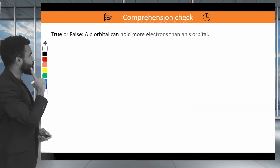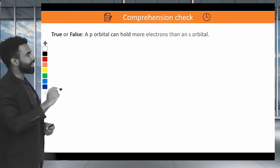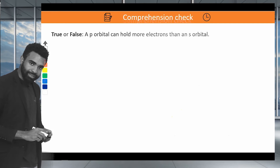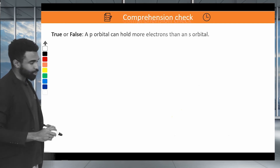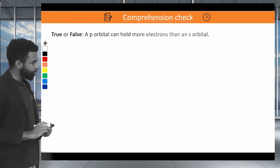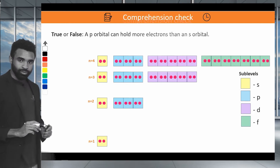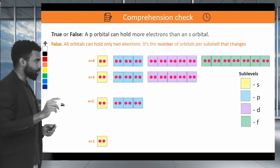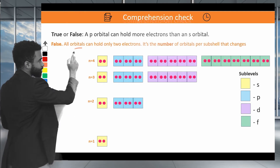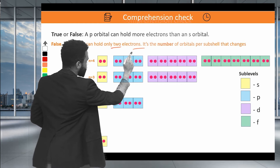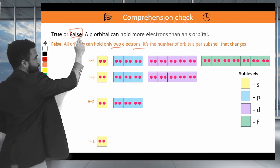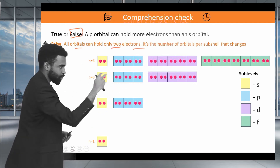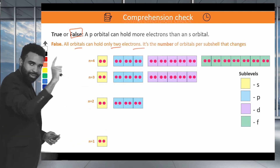A P orbital can contain more electrons than an S orbital — is this true or false? This is false. All orbitals, regardless of type, can hold only two electrons. The difference between P and S is that the P sublevel has 3 orbitals while the S sublevel has only 1 — but each individual orbital still holds just 2 electrons.